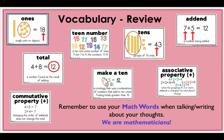Others might still just grab that 7 and count up 5, and that's fine too. The 'associative property' is when the grouping of three or more addends is changed but the total doesn't change. So whether I add 2 plus 3 plus 4, or 4 plus 2 plus 3, or 3 plus 4 plus 2, it doesn't matter what order I put those numbers in — they are going to equal 9 every time.